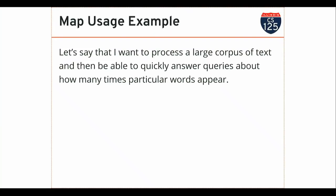Let's do a classic map example. Let's say I want to take a bunch of text — like the Constitution of the United States, or news articles, or all the Reddit content posted this semester — and build a count of how many times different words appear. This sounds like a silly thing to do, but it's actually the first step in a lot of machine learning on text. It's called a bag of words — a lot of machine learning models don't actually use the structure of text at all, they just count how many times different words appear and build predictive models on that. It's actually surprising how well that works.